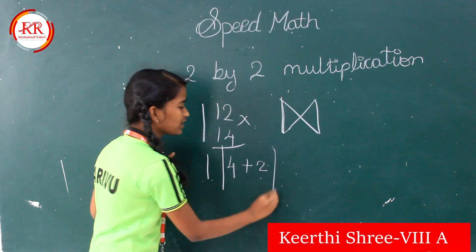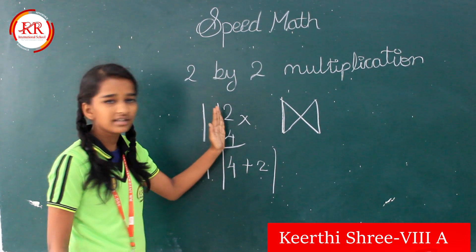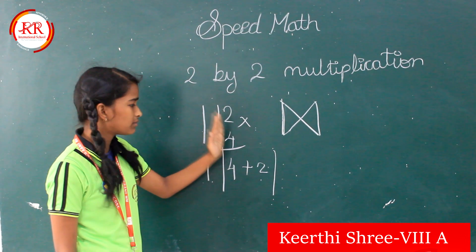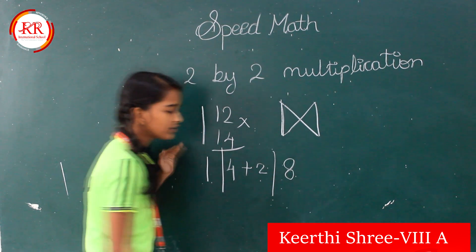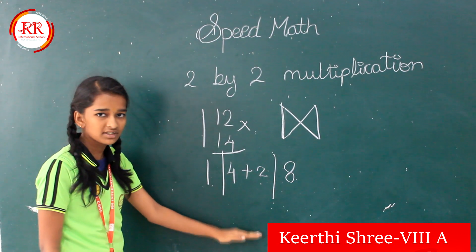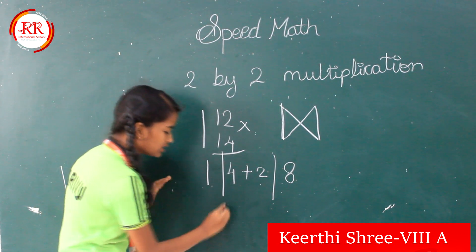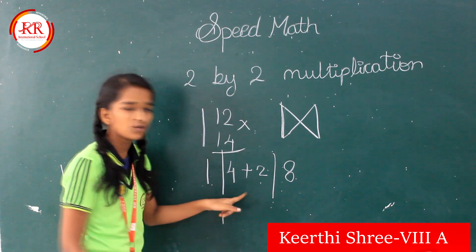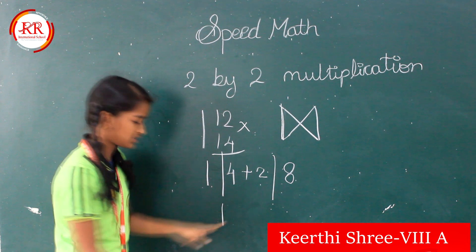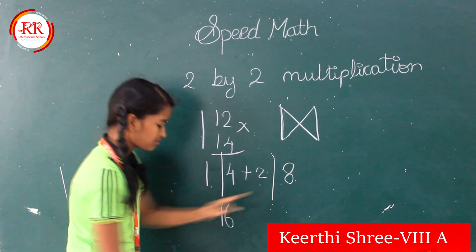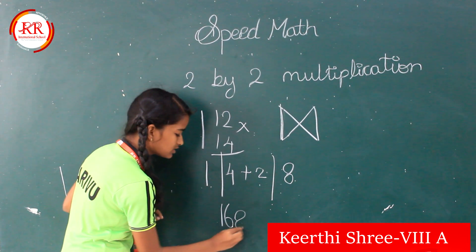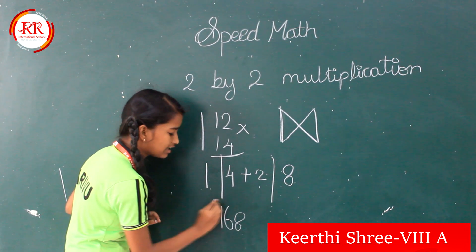Next we are going to multiply the right corner numbers, that is 2 into 4, which is 8. So we are going to add these numbers: 1, then 4 plus 2 is 6, and the last number 8. So this is the answer.